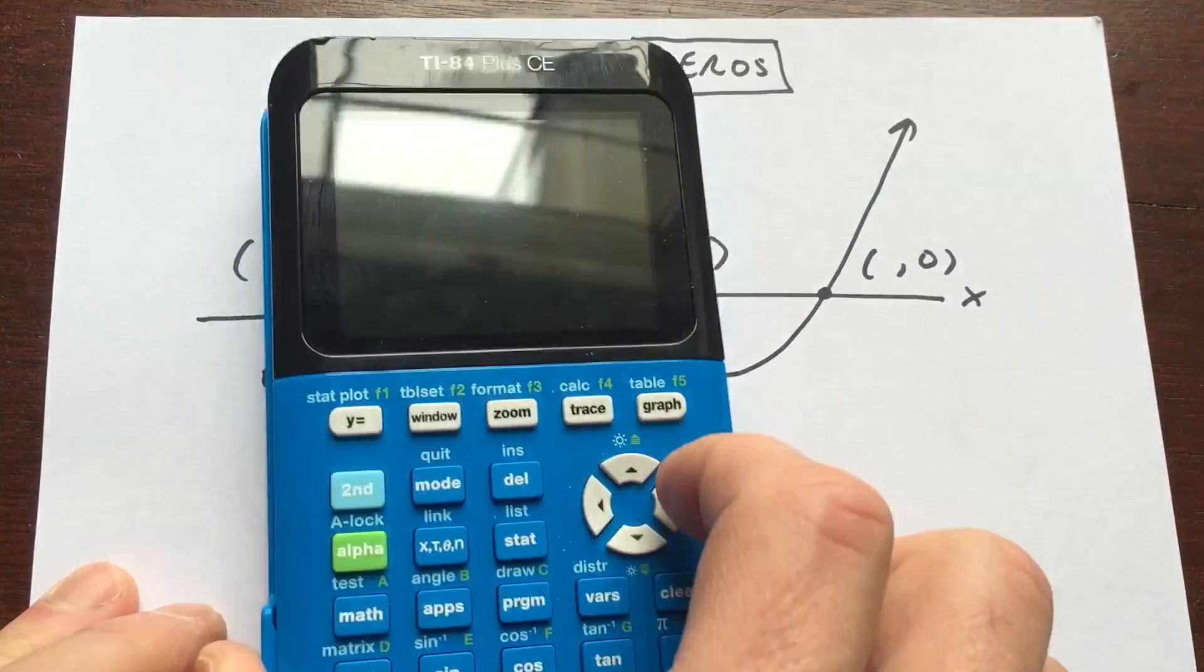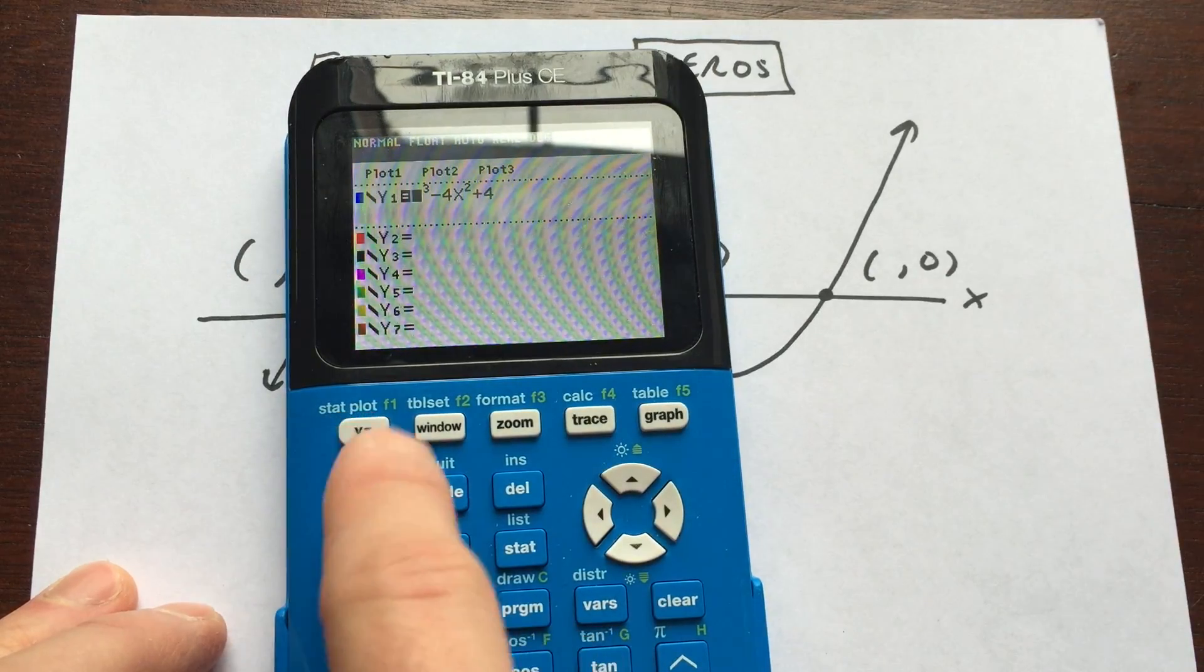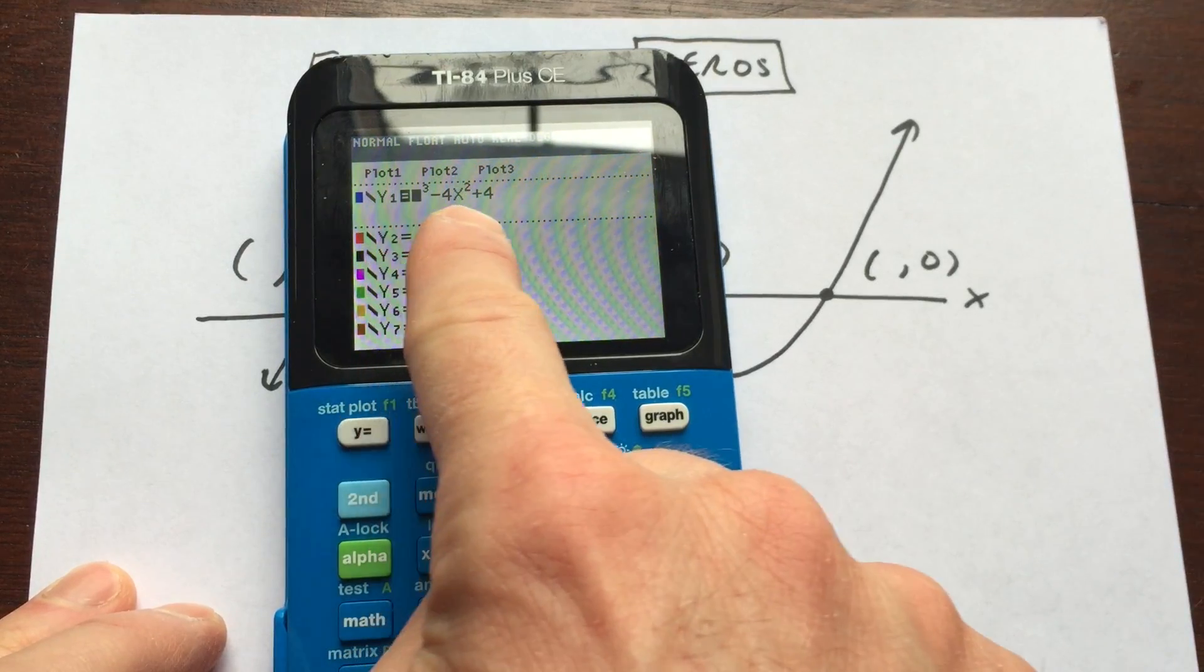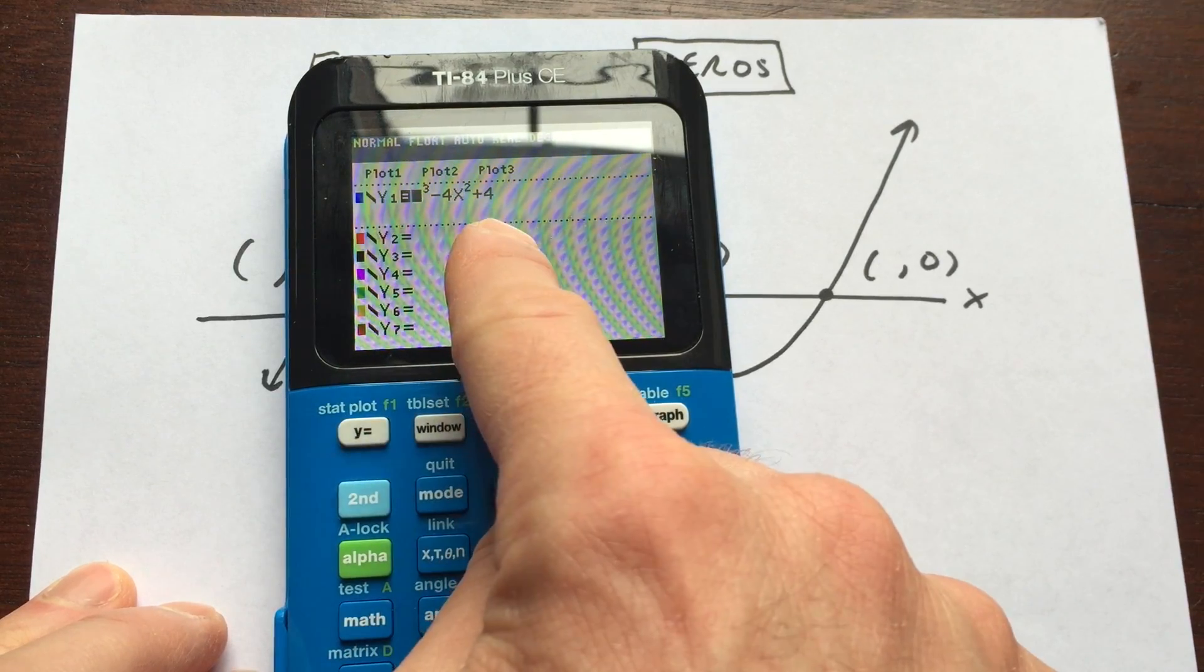So to do that on the calculator, what I've done here is I've already inputted under y equals, you can see x cubed minus 4x squared plus 4. I just put in an equation here to show you how this works.